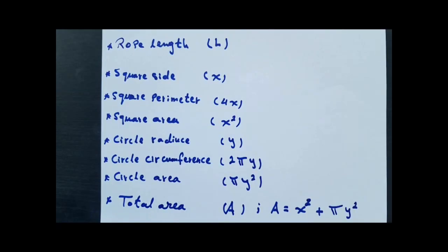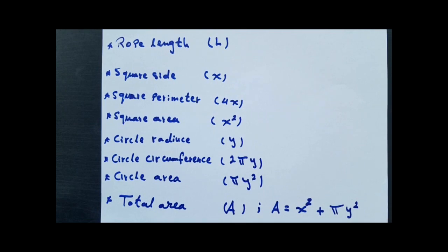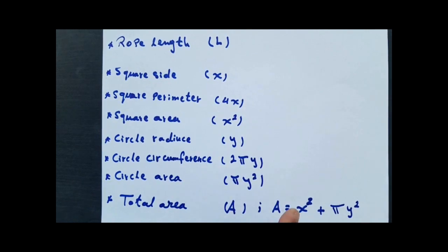Let's set the following symbols for the corresponding parameters: rope length L, square side x, square perimeter 4x, square area x squared, circle radius y, circle circumference 2πy, circle area πy squared, and total area of square and circle is A, which is x squared plus πy squared.